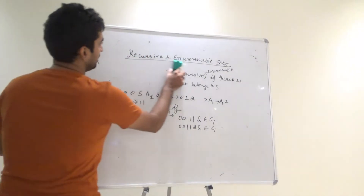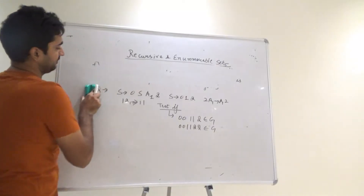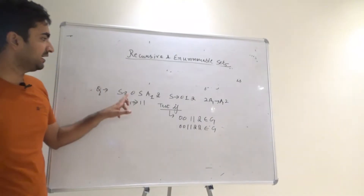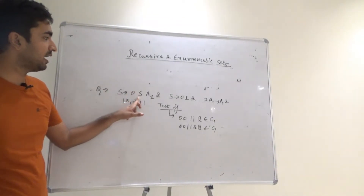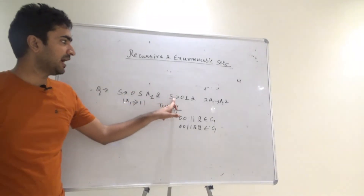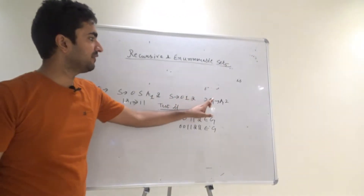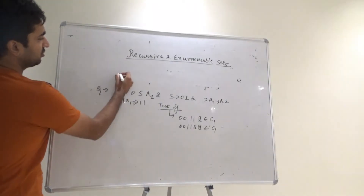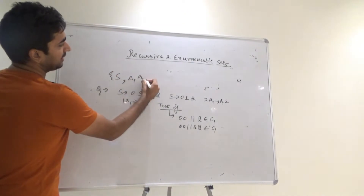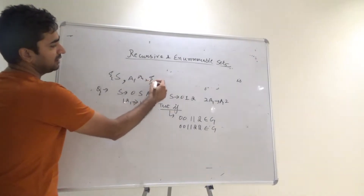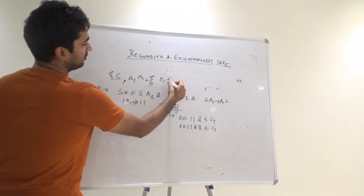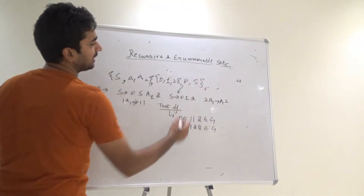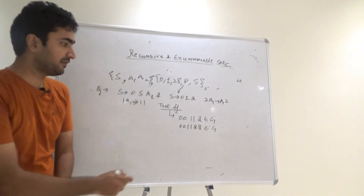Here is an example. We have S as a starting symbol with the rule: S → 0 S A1 2. S is also given as 0 1 2. A1 is given as A1 2 1, and A1 is also given as double 1. So these are all the production rules. We have non-terminals A1 and A2, terminals 0, 1, and 2, and the starting symbol S.